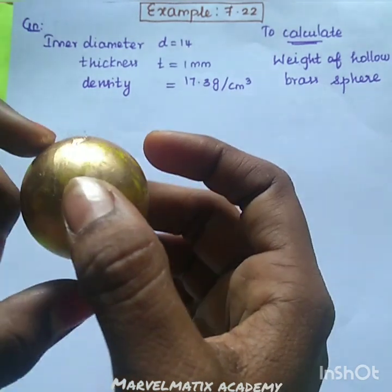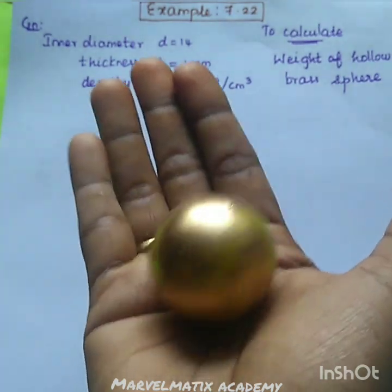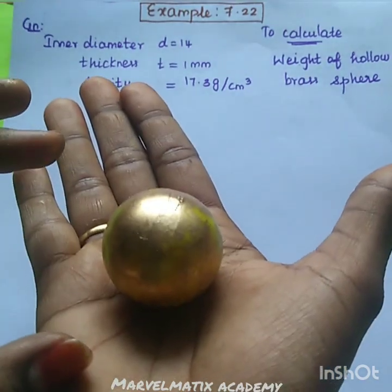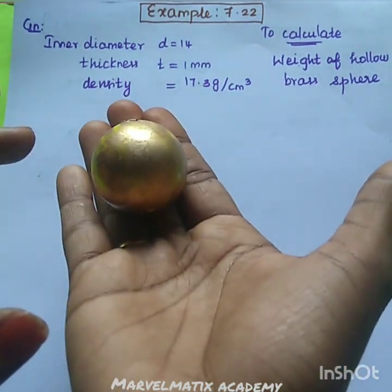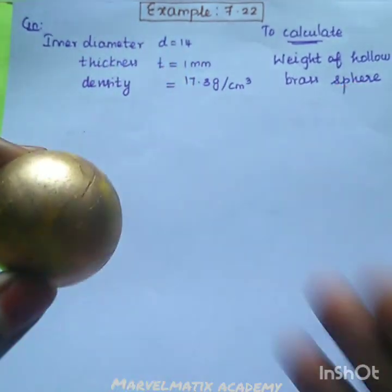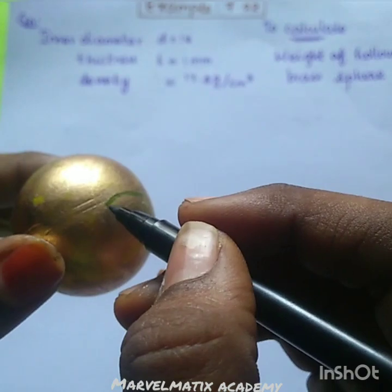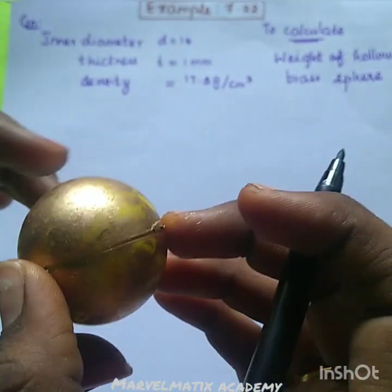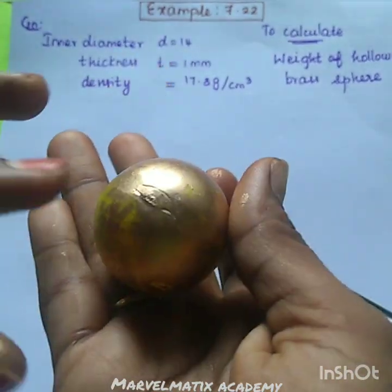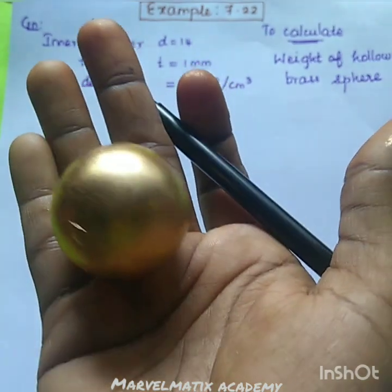Don't forget to spray this. You can spray it in place like this and store it. You can use a small amount. So this sprayer is done, all the sprayers are done. Ok, what you are doing here is the inner diameter. This is the inner diameter and this is the outer diameter, so diameter is full.